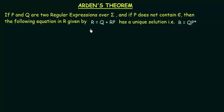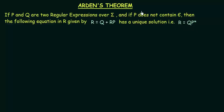Arden's Theorem is telling us that if you have two regular expressions p and q over sigma, and if p does not contain epsilon, then this equation r = q + rp has a unique solution given by r = qp*. That means whenever you get an equation of this form, r = q + rp, you can directly replace it with r = qp*, because this is a solution to that, as stated by Arden's Theorem.